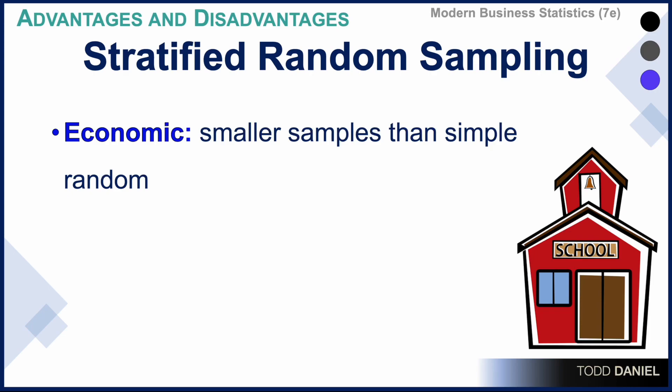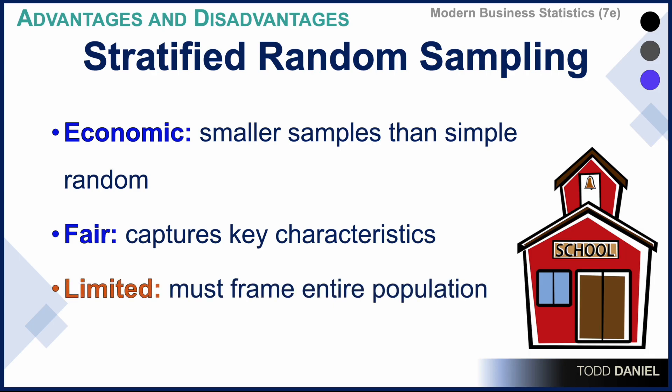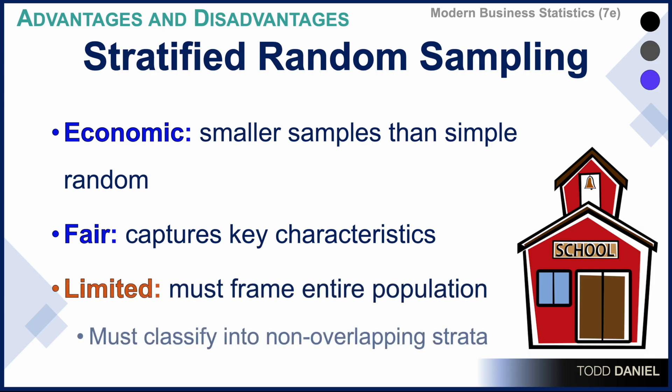The advantage to stratified random sampling is its economics. You can use smaller samples than you would if you used a simple random sample. And it is also perceived as fair because it is deliberately capturing key characteristics, which makes that sample appear much more representative. However, the use of stratified sampling is limited in that you must be able to frame the entire population and classify your population into non-overlapping strata.